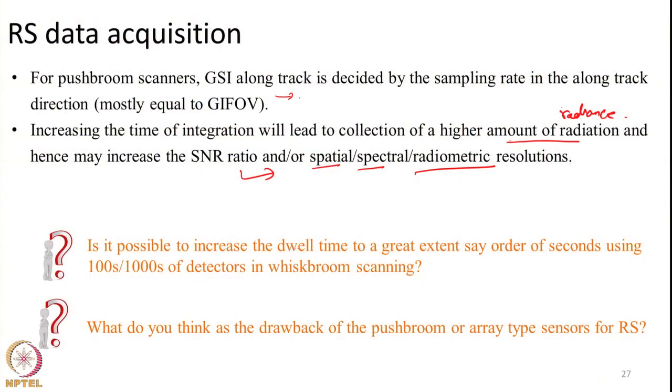The first question is: is it possible to increase the dwell time to a great extent — say on the order of seconds — by using thousands of detectors in whisk broom scanning? I showed that with 10 detectors the time increased 10-fold from 0.35 microseconds to 3.57 microseconds. Can we put 1000 detectors in the along-track direction and do whisk broom scanning? Please think it over.